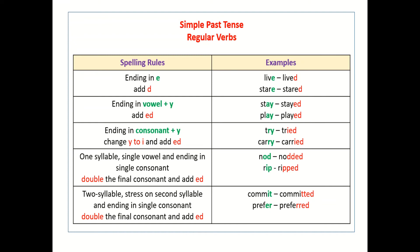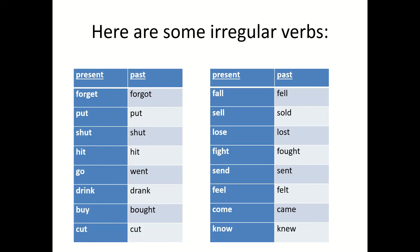And what about if the verb is two syllables, with stress on the second syllable and ending in a single consonant? We'll just need to double the final consonant and add ED — like commit → committed, prefer → preferred.